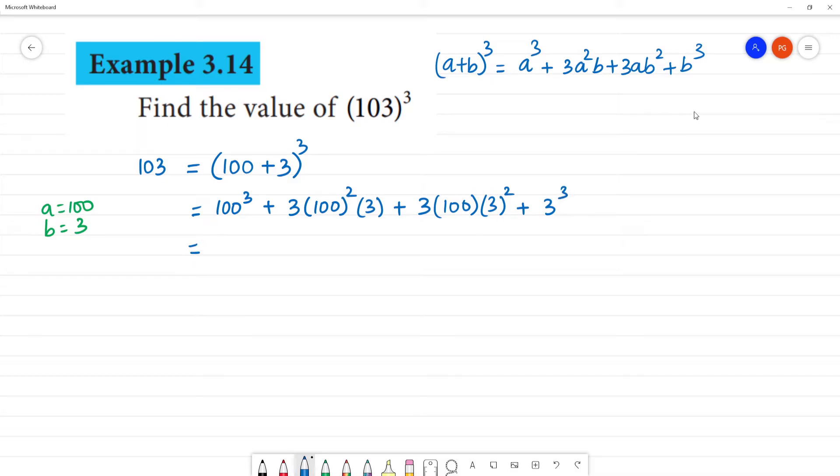100³ is 100 multiplied 3 times: 100×100×100. The value is 1 with 6 zeros—1, 2, 3, 4, 5, 6 zeros.